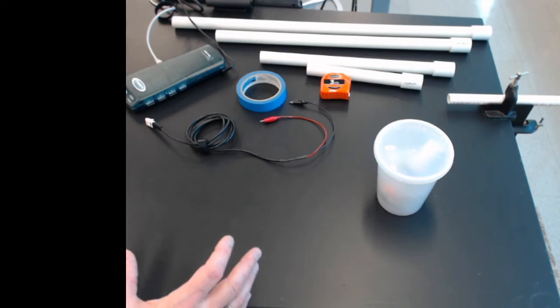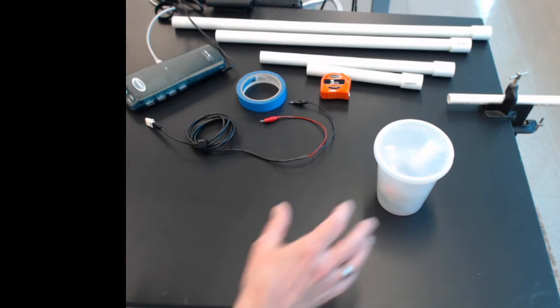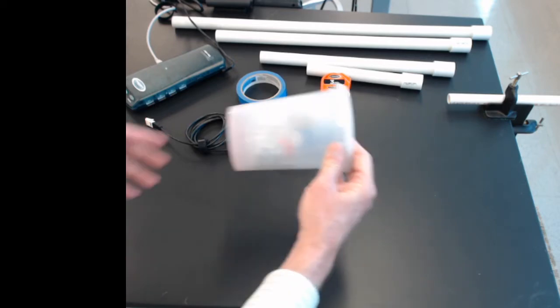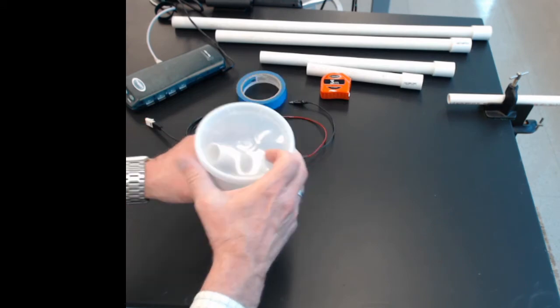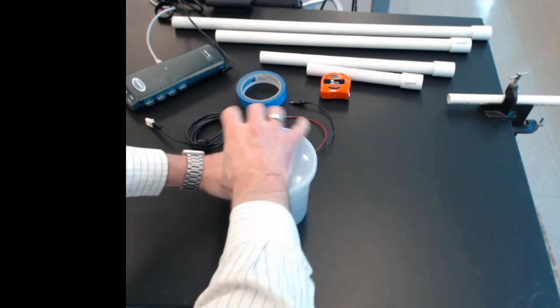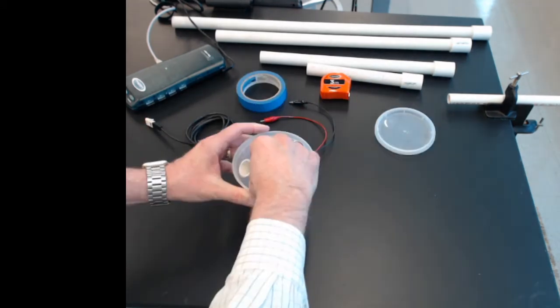Here's the equipment that we're going to use for these various experiments to test Faraday's law. The main ingredients come in this little take-out canister. Here's a little kit. Let's open it up and use that.